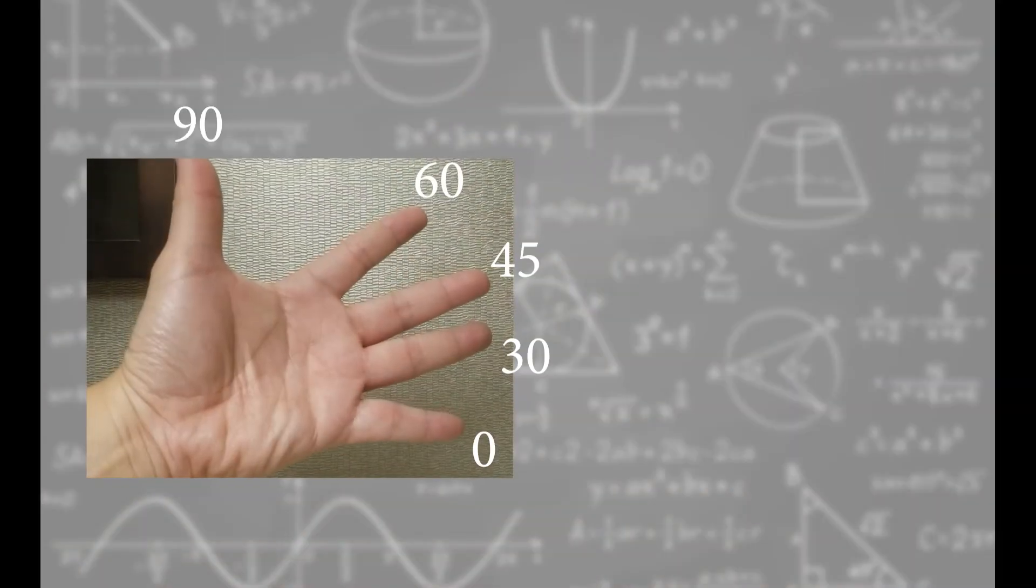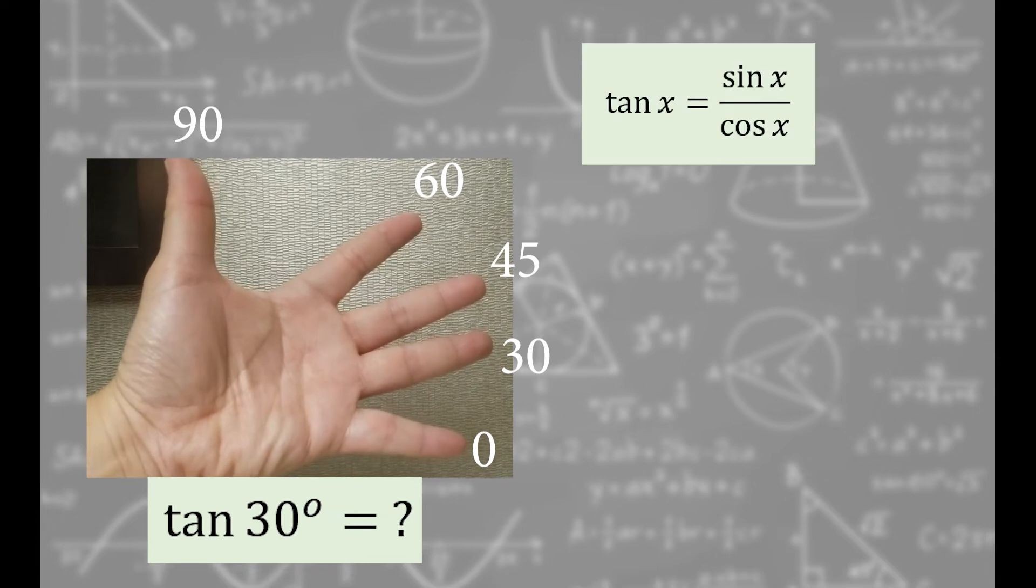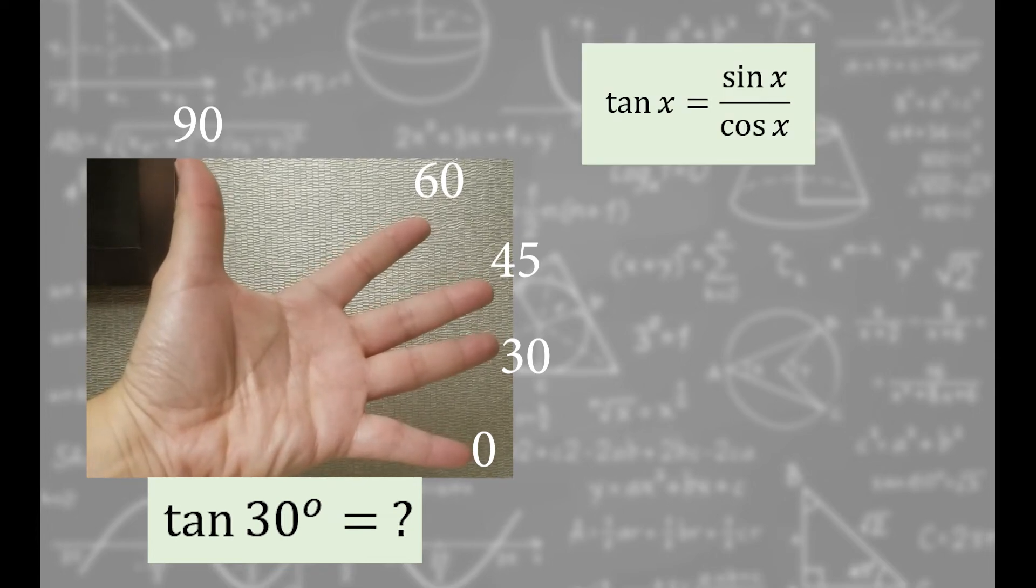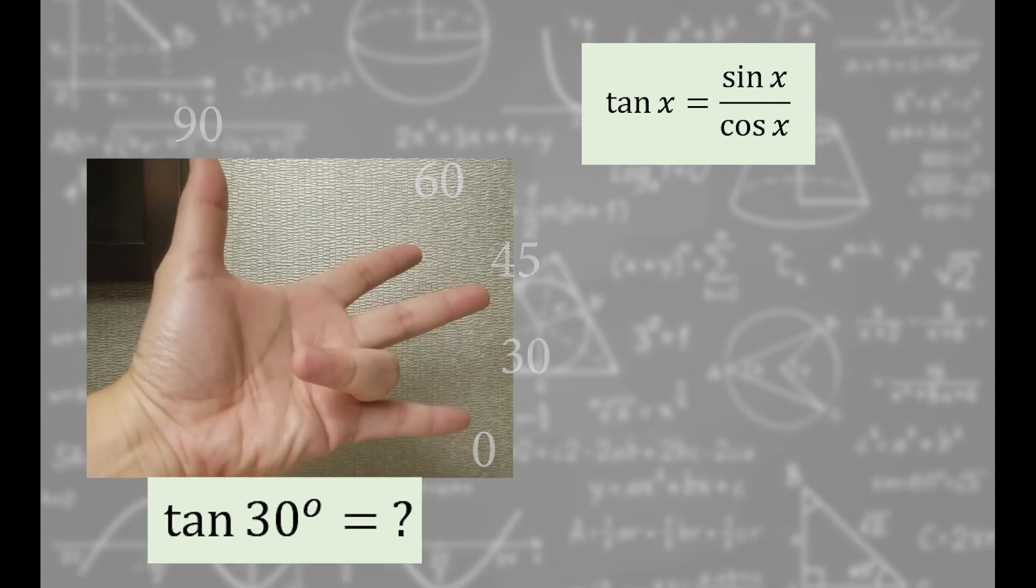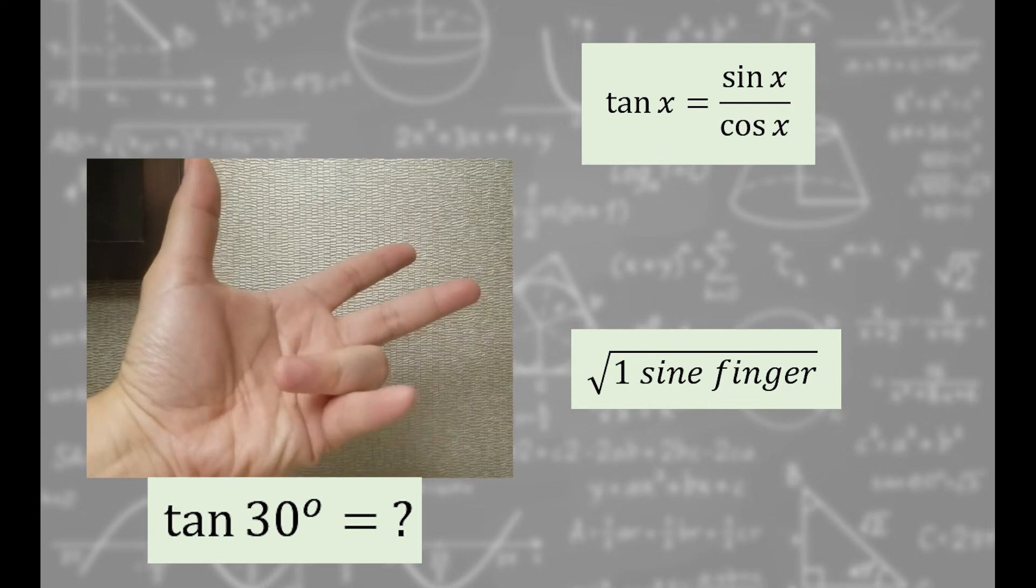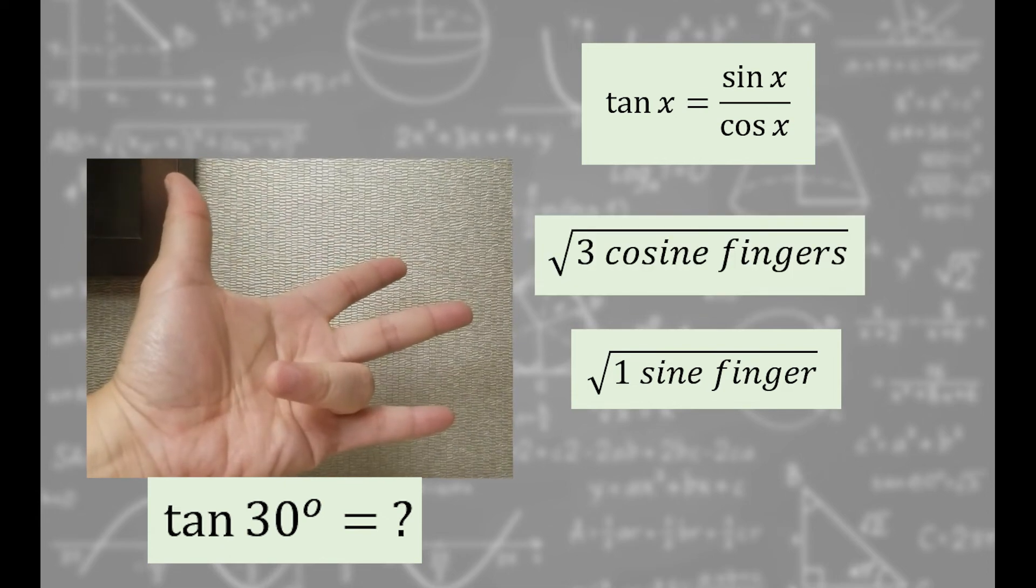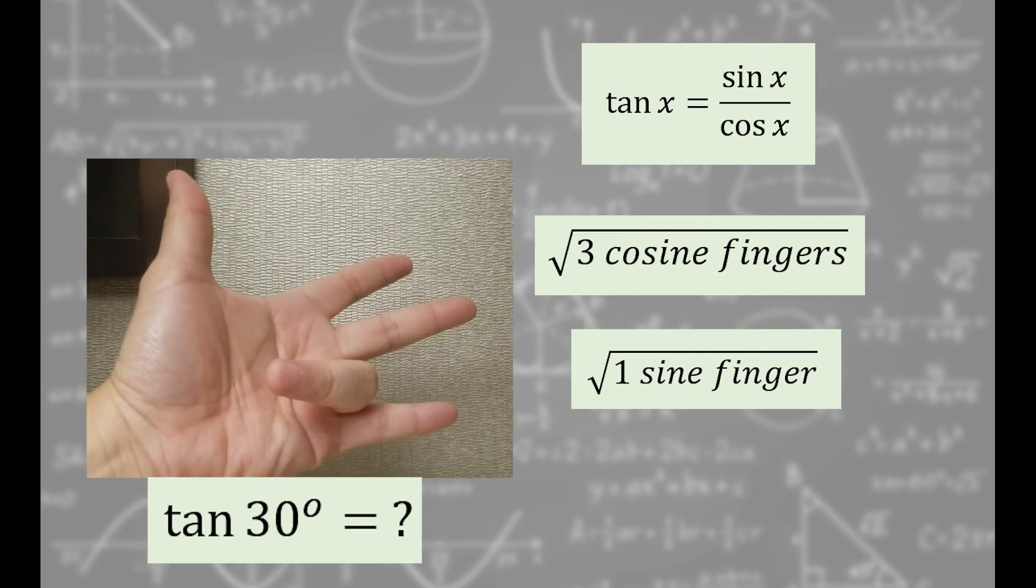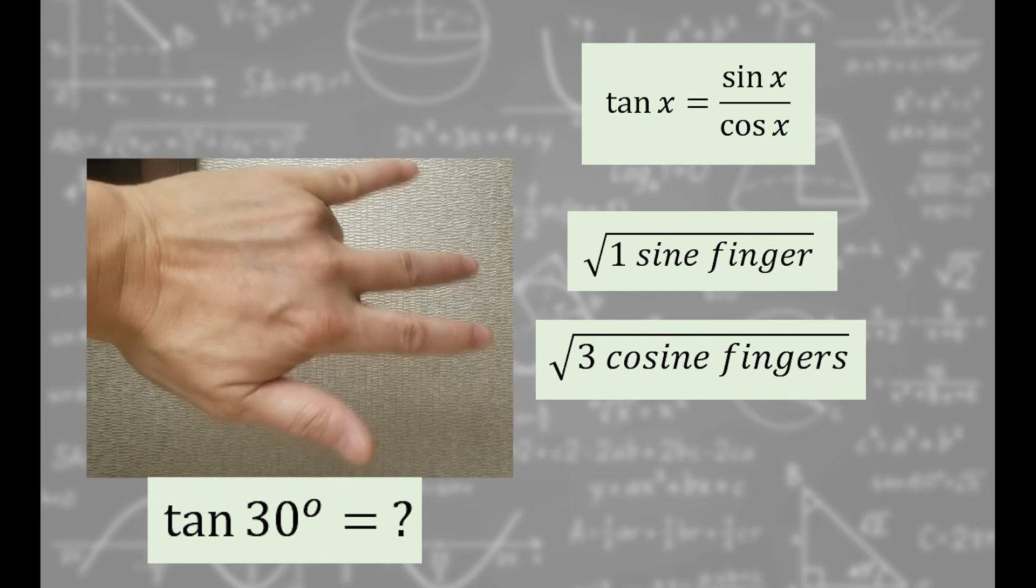Now let's do tangent. It's a little different. Let's do tangent of 30 degrees. Tangent is equal to sine over cosine. This finger is 30 degrees. There's one sine finger and three cosine fingers. With square roots, of course. But we need sine over cosine, so flip our hand over. Don't forget square root.